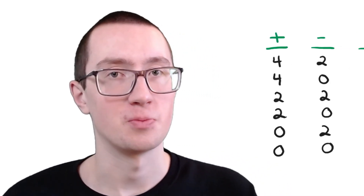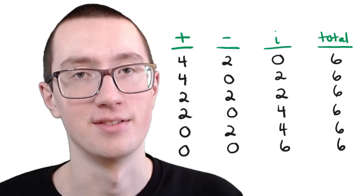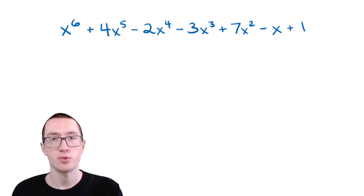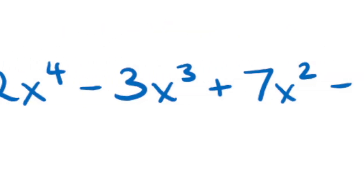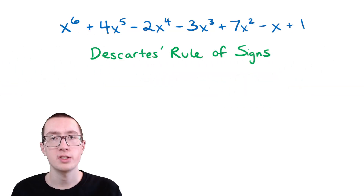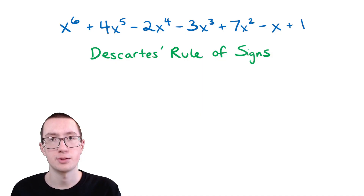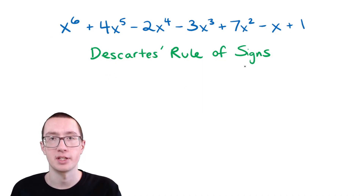Here's how to use Descartes' rule of signs and how to make those big scary tables you've probably seen. So here's the example that we'll be doing in this video. We need to use Descartes' rule of signs on this big long thing. So what is Descartes' rule of signs? Well, it's basically just a way of predicting the kinds of answers that we would get if we solved for x.